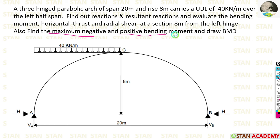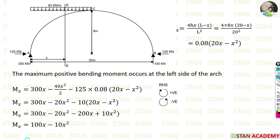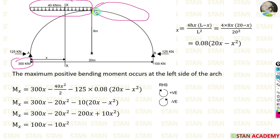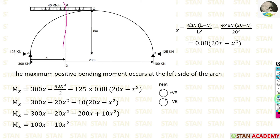To find the maximum positive and negative bending moments, we look at the reactions and load distribution. VA = 300 kN is larger than VB = 100 kN, and the load is only on the left half, so the maximum positive bending moment will occur on the left side. I make a section at horizontal distance x from point A and call it section X-X.